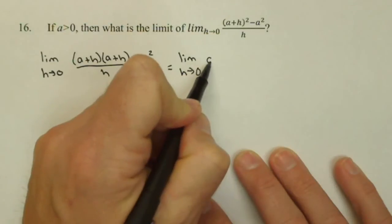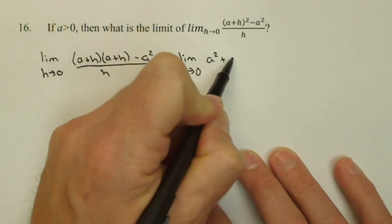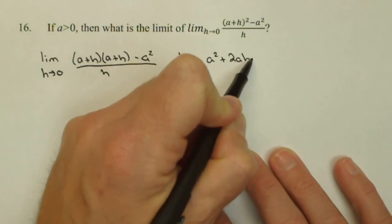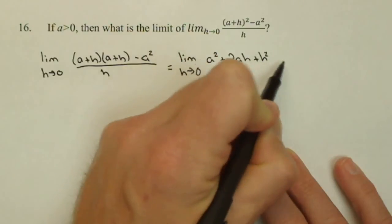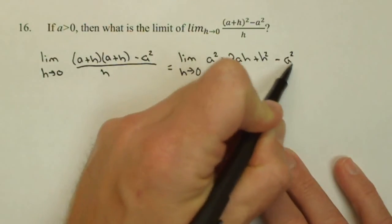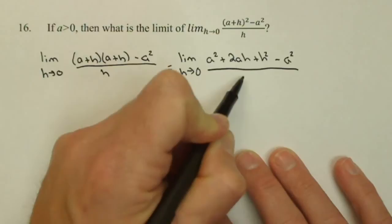It actually needs to be foiled out and you get a squared plus 2ah plus h squared minus a squared, all over h.